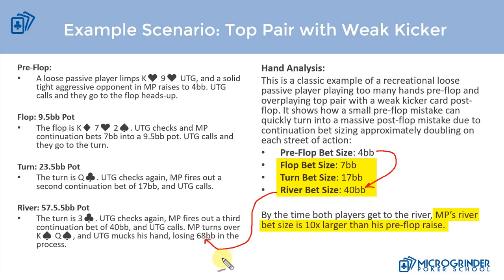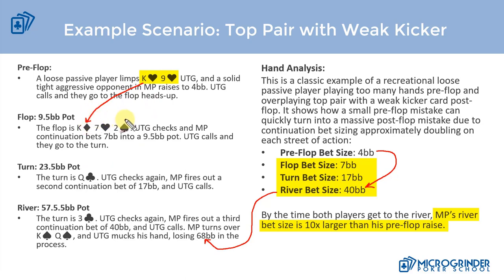I don't want you to focus on all the strategy of what middle position is doing, but what I want you to take away is that players overvaluing top pair with a terrible kicker — a hand they shouldn't be playing under the gun — will get into situations like this. One preflop mistake leads to a larger mistake on the flop, an even larger one on the turn, and an even larger one on the river. This is a level-one opponent: they see top pair on the board and think they have to call.